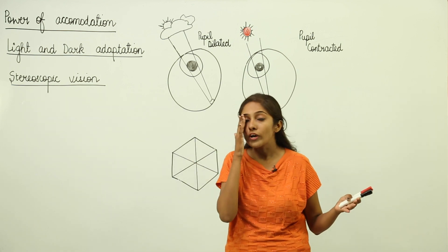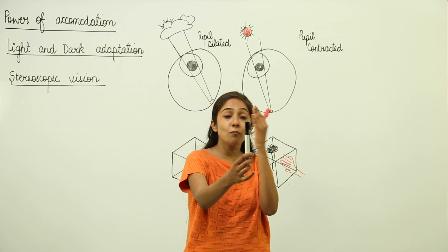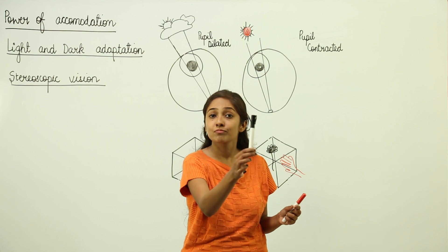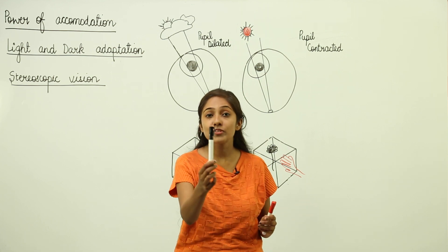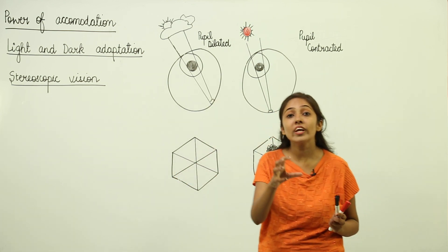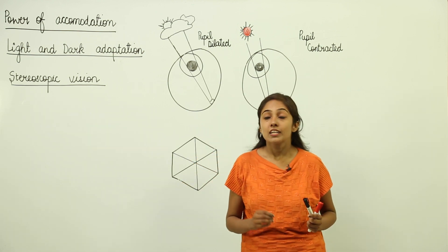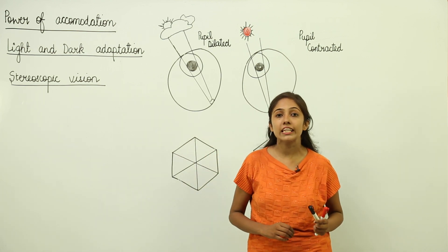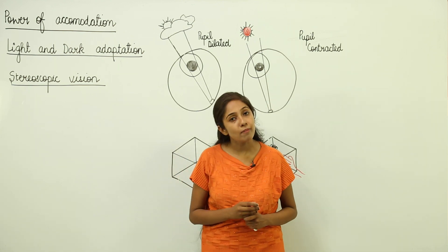You can try this yourself: close one eye, look at an object, then open that eye and close the other, and look at the object again. You will see a change in the perceived distance or location. But when you see the object with both eyes open, you can locate the accurate distance. This type of vision is known as stereoscopic vision or binocular vision.